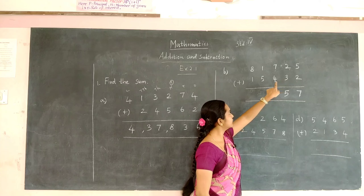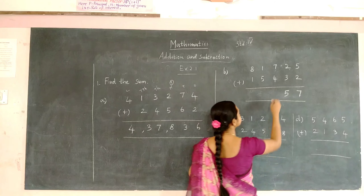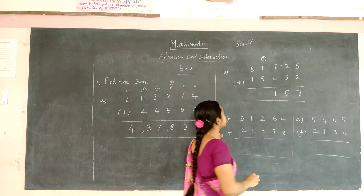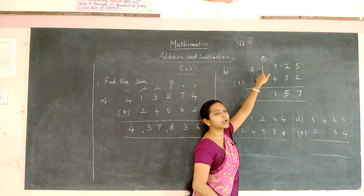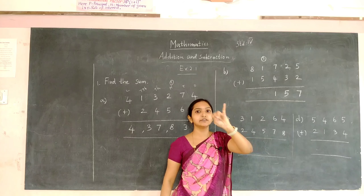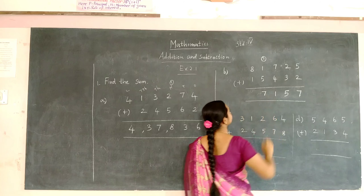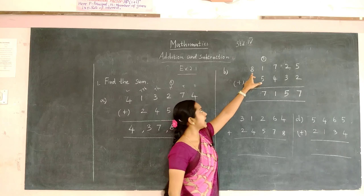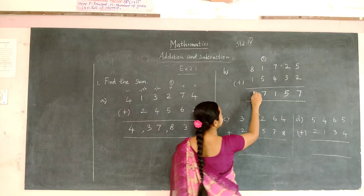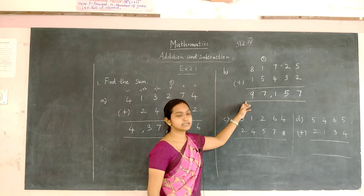To 7 you have to add 4, that is 8, 9, 10, and 11. 1 should be carried to the next place. 1 plus 1 will be 2. To 2 you have to add 5, that is 3, 4, 5, 6, and 7. To 8 you have to add 1, that is 8 plus 1 will be 9. Now we have got the answer.